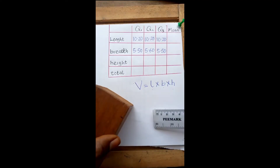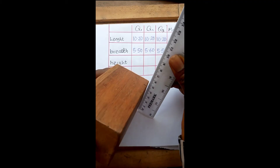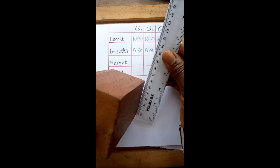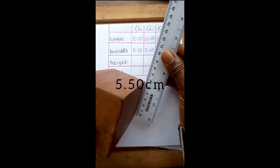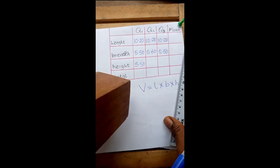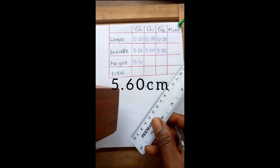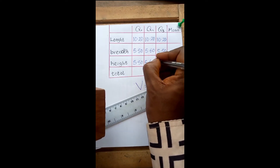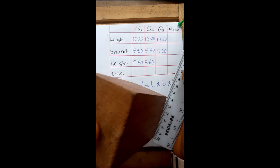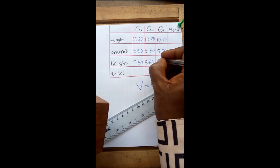Then to measure the height. Now I have 5.6 cm — 5.60 cm — and then measure it for the last time. This is 5.6 cm.